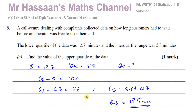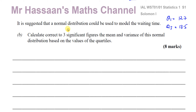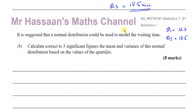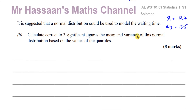Now for part B. It says it is suggested that a normal distribution could be used to model the waiting time. We have to calculate, correct to three significant figures, the mean and the variance of this normal distribution based on the values of the quartiles. We need to think about how to standardize these scores and use the normal distribution bell curve to work out the parameters. We need to find the mean and variance of this model distribution.